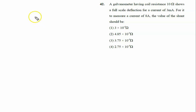A galvanometer having coil resistance 10 ohm. The galvanometer resistance is given to us as 10 ohm. A full scale deflection for current of 3 milliampere, so ig full scale current is given by 3 milliampere, which is 3 into 10 raised to the power minus 3 ampere.